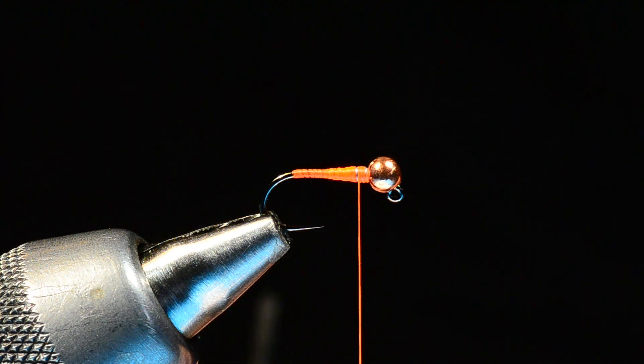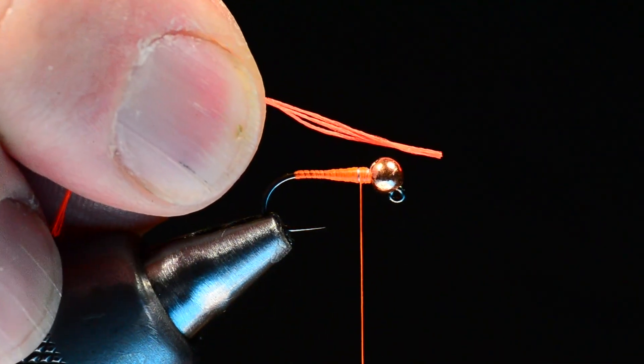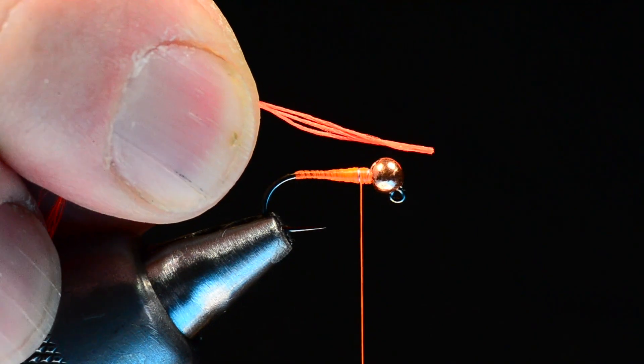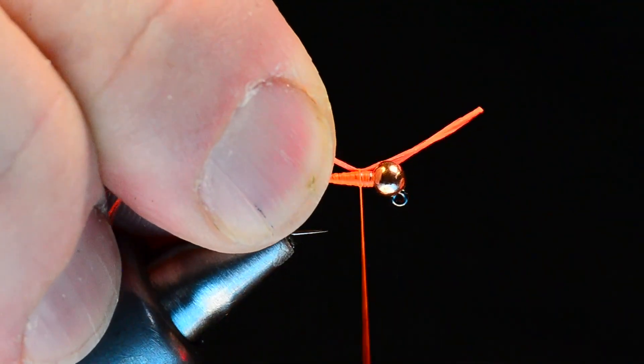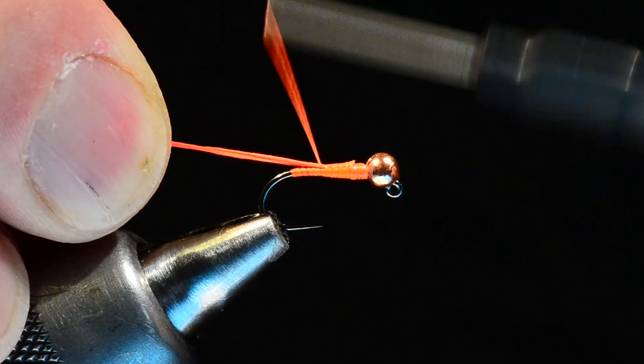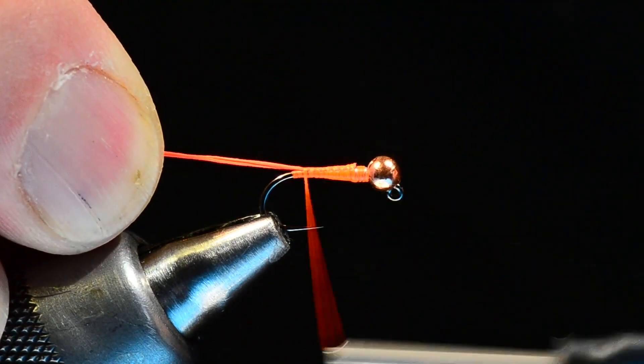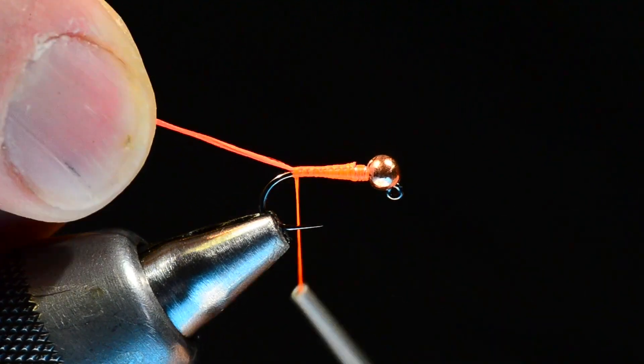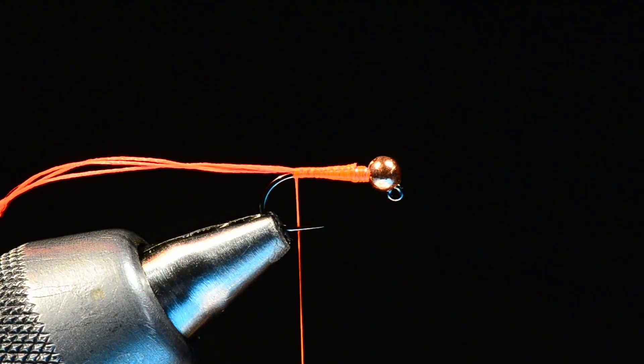For the tail, this is Glow Bright Floss, number five Fire Orange color, and I've got three strands. I'm going to catch those three strands and pull them down to length. I'm going to wrap back over them keeping them on top of the hook as I go all the way back to the bend. I'll just leave those long hanging out there for right now.